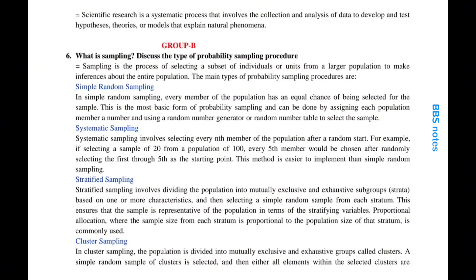Systematic sampling involves selecting every nth member of the population after a random start. For example, if selecting a sample of 20 from a population of 100, every fifth member would be chosen after randomly selecting the first through fifth as the starting point. This method is easier to implement than simple random sampling.